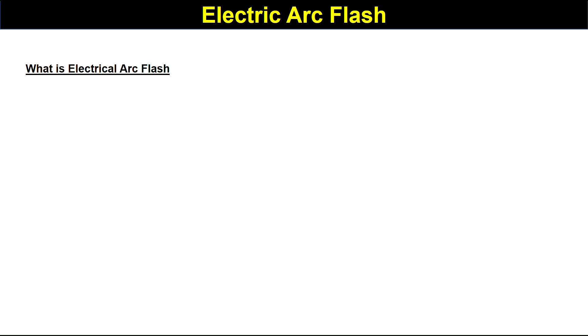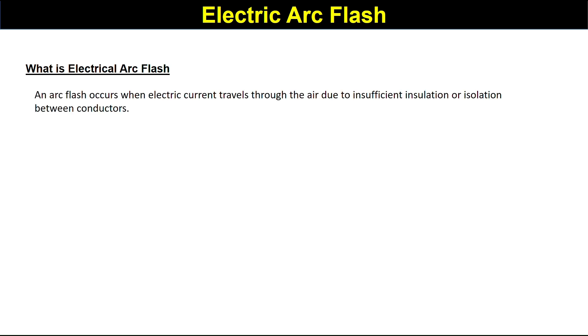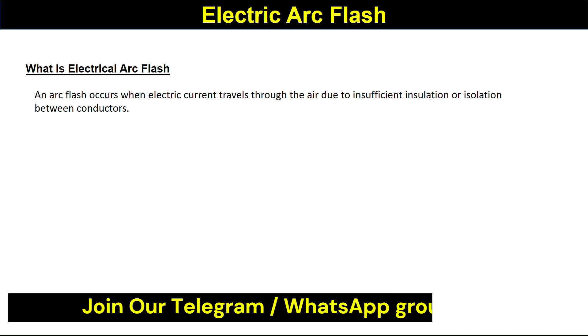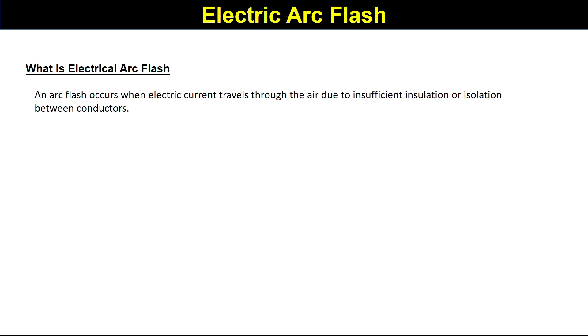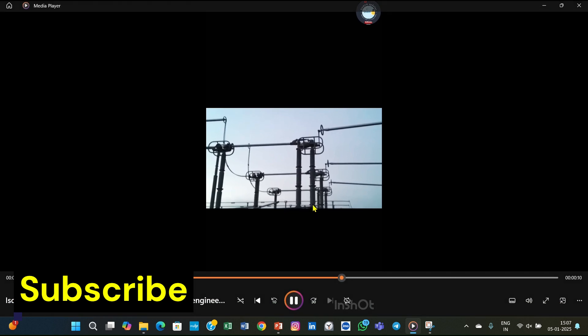What is electrical arc flash? An arc flash occurs when an electric current travels through the air due to a breakdown of insulation or isolation between conductors. When an electric current passes from one conductor to another through the air, this is called an electrical arc flash.